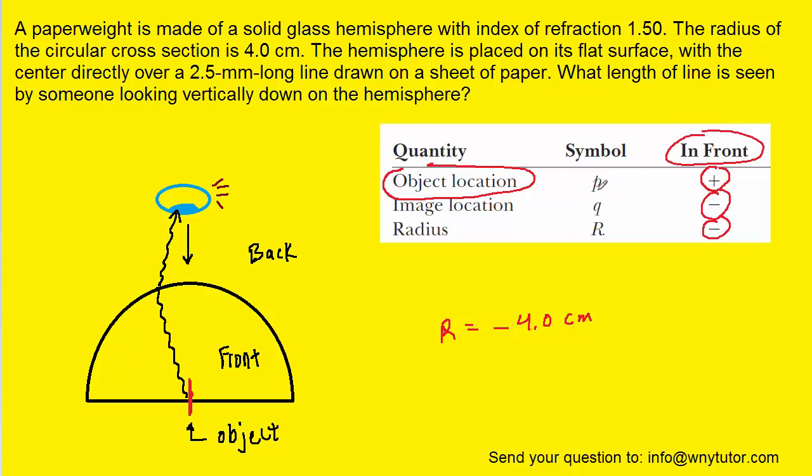Now, for the object distance, which is p, we would simply want to measure the distance from the object to the actual surface. So it would be this distance right here. And we can see that that distance is the radius of the spherical surface.